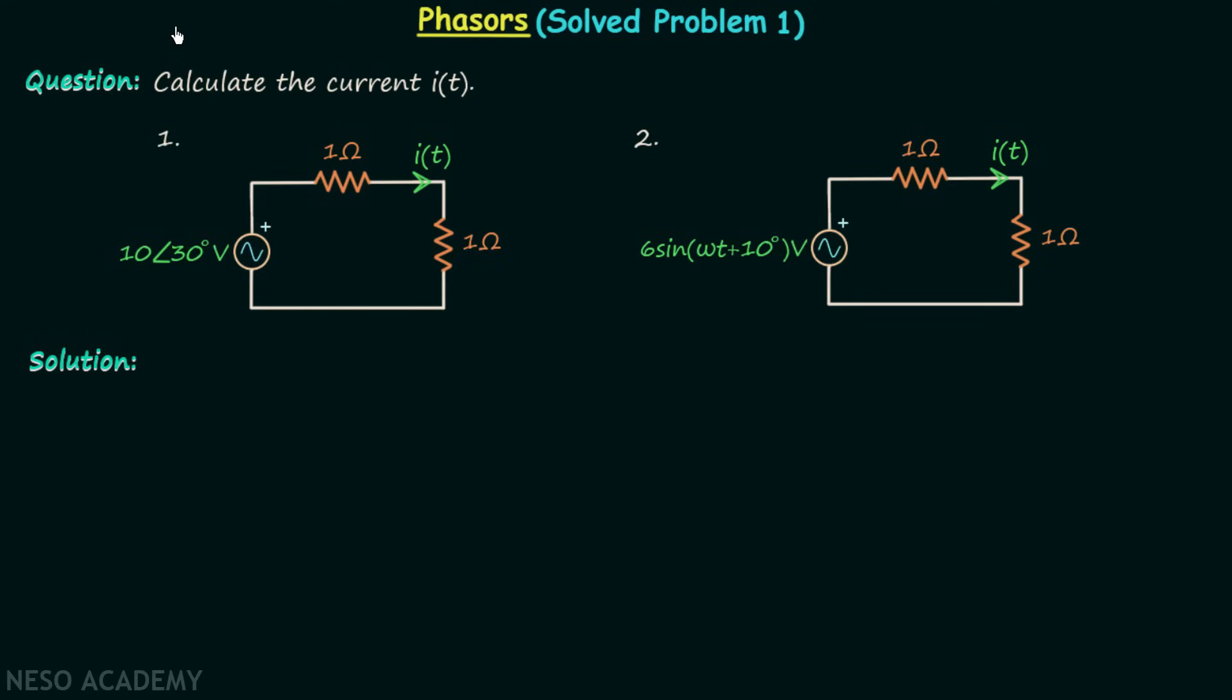We are done with the basics of phasors and now we are going to solve a few questions based on phasors. In the first question we are required to find current IT in both the circuits given.